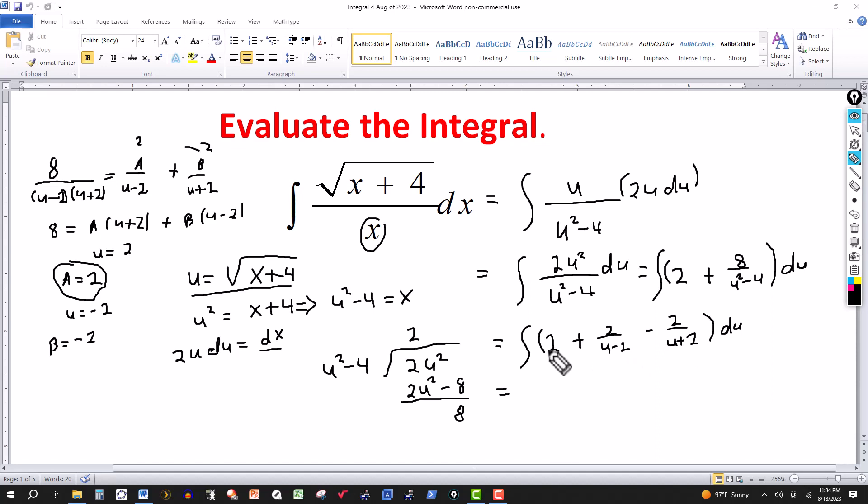So now we just integrate. The integral of 2 with respect to u is 2u. But what is u? u is the square root of x plus 4. So let's just write this as 2 square root of x plus 4.